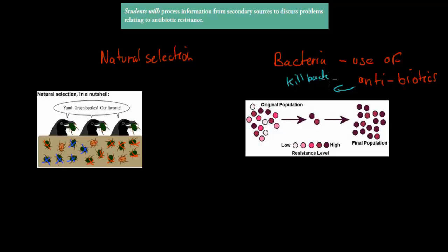Now let's say we have an original population — this is our original population — and you can see there are different colors. These different colors have to do with the resistance, so how resistant they are to the antibiotics. If it's white, that means it's very low resistance. If it's a dark purple, it means it's very high in terms of resistance, and everything in between is in between resistance.